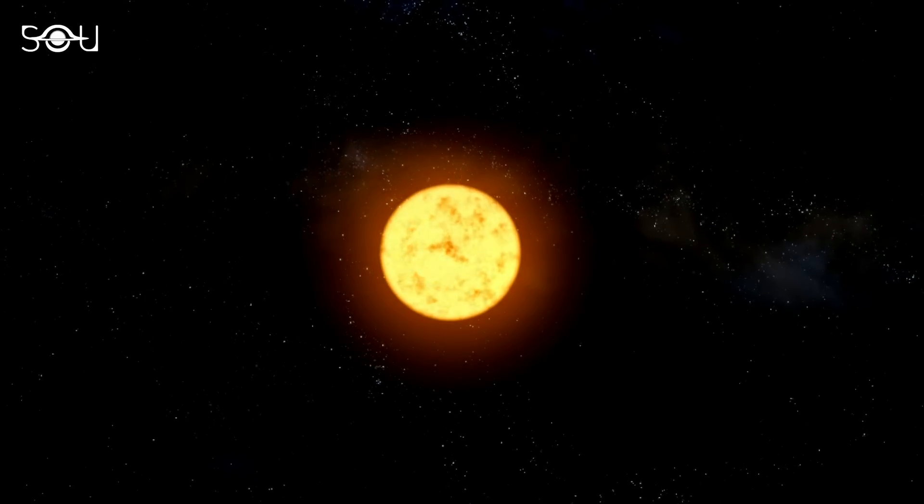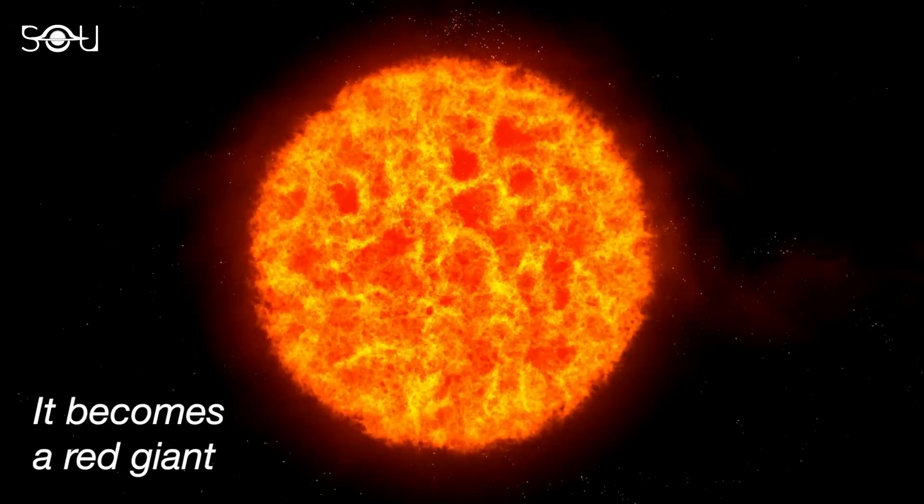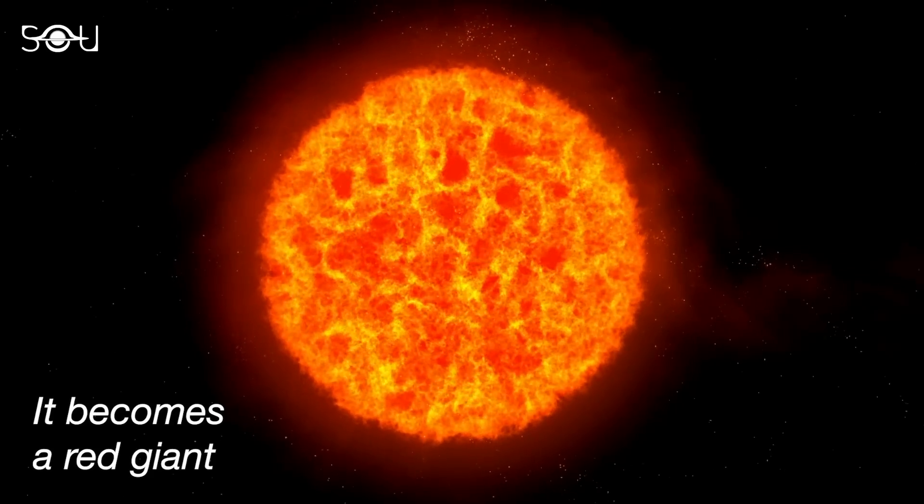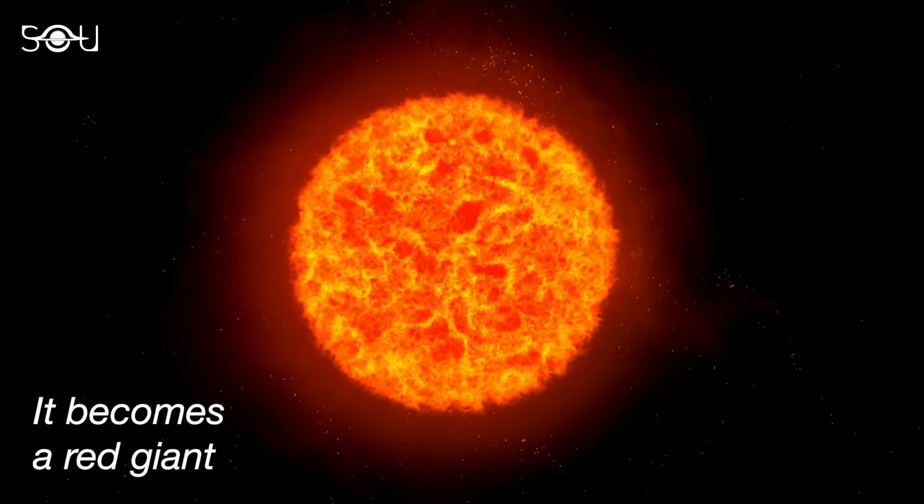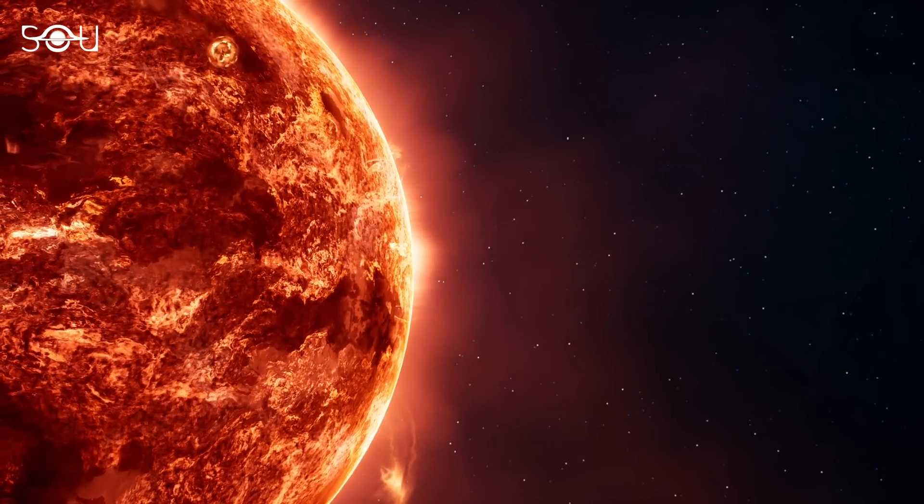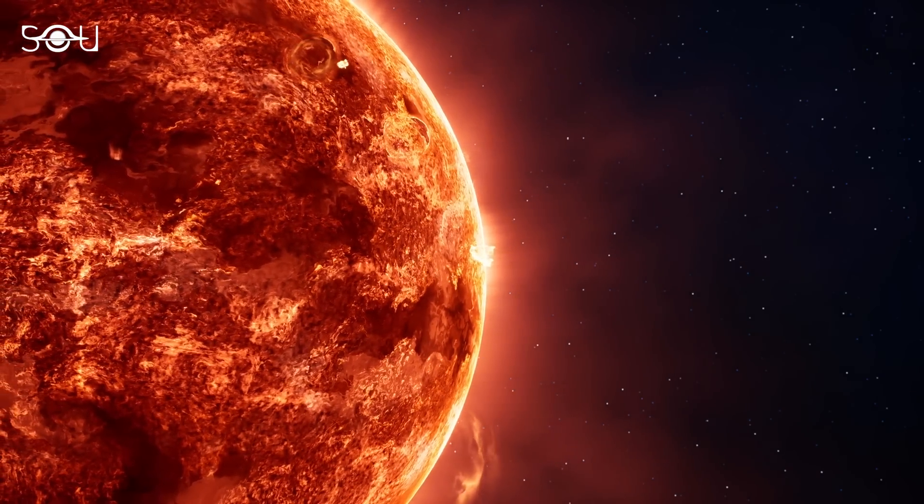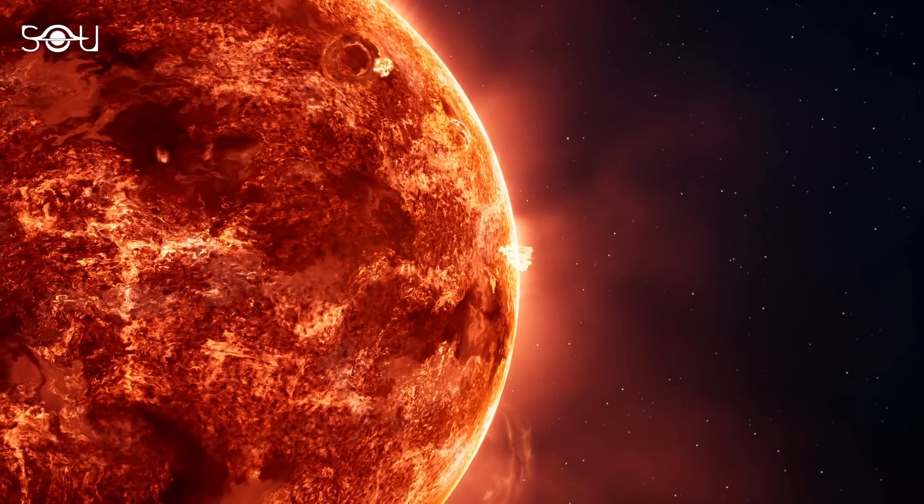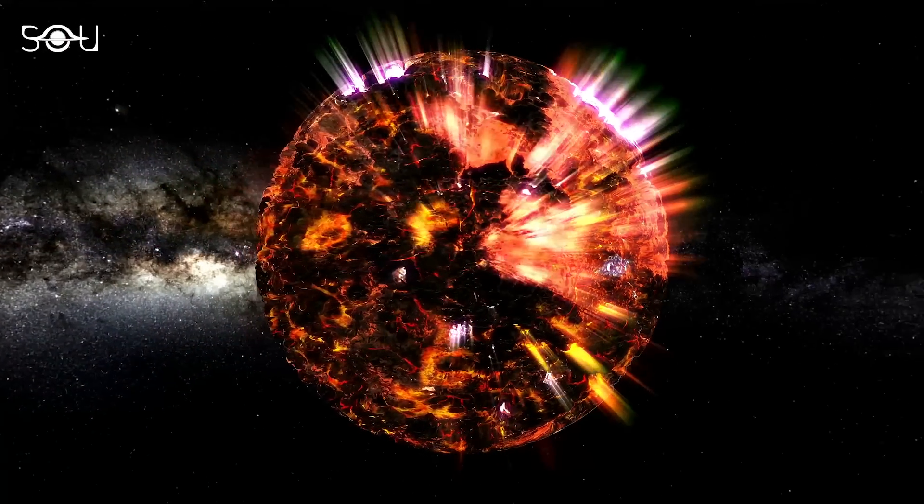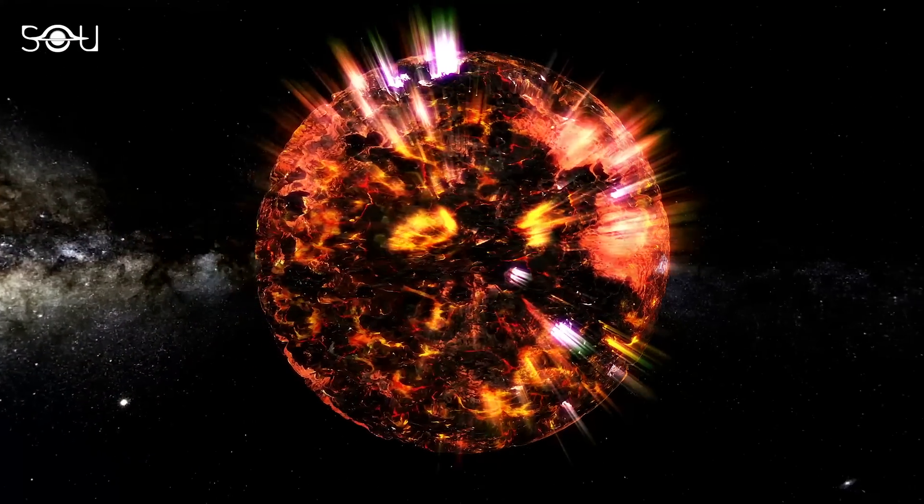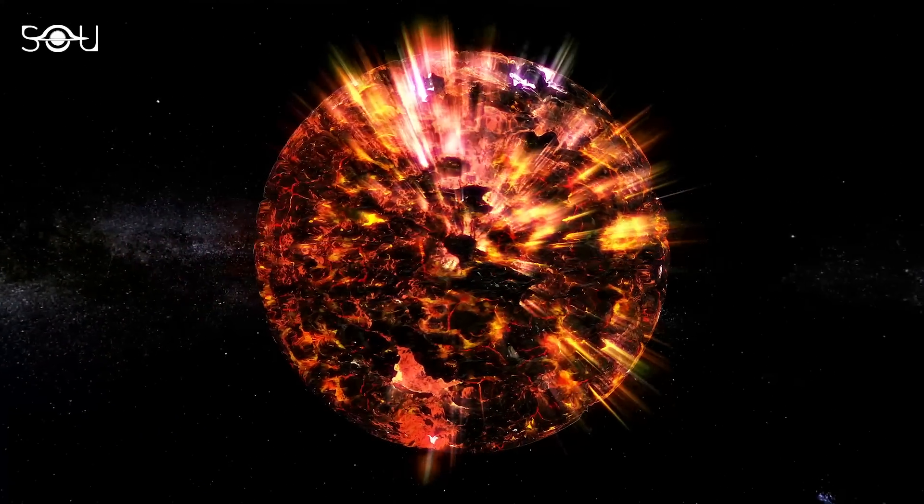This energy surge produces an outward pressure that propels the expansion of the star's outer layers, inflating its size considerably. This stage marks the red giant phase in the star's life cycle. As the star swells, its surface area increases by a factor of 100 to 1000, leading to a significant drop in its temperature. The star's energy is now spread over a larger area, resulting in the star emitting light towards the red end of the spectrum. That's why we call it a red giant.